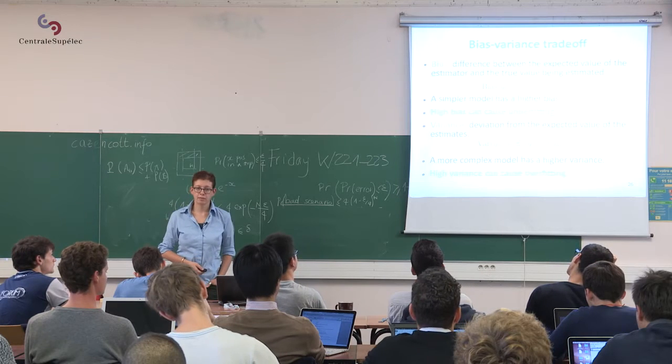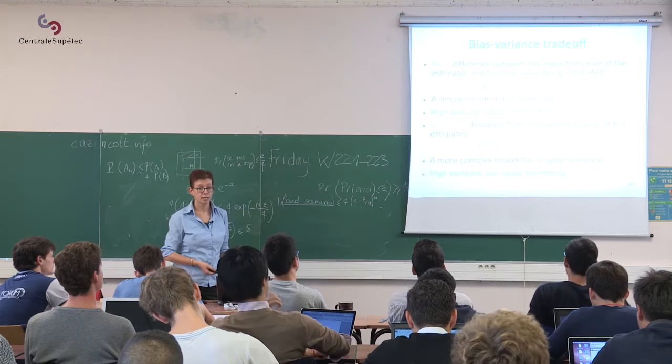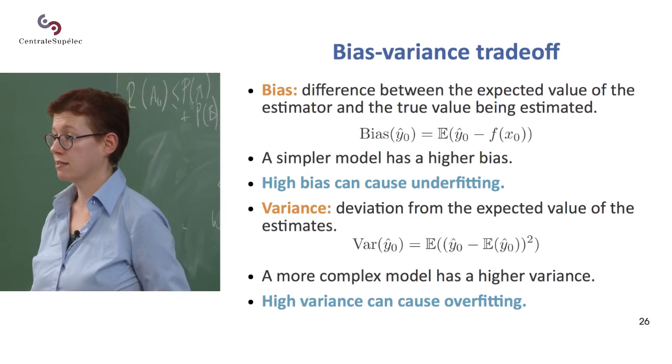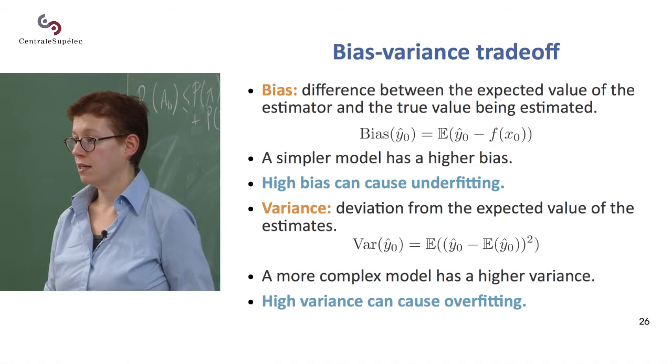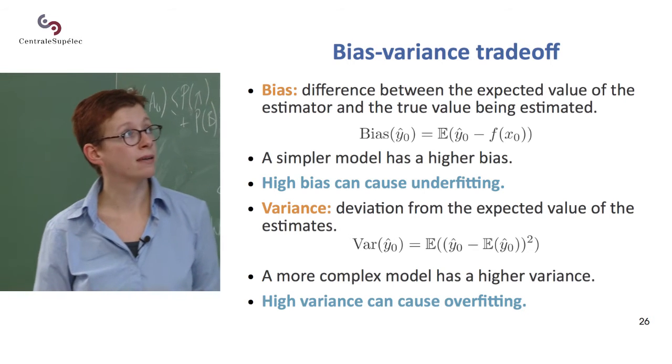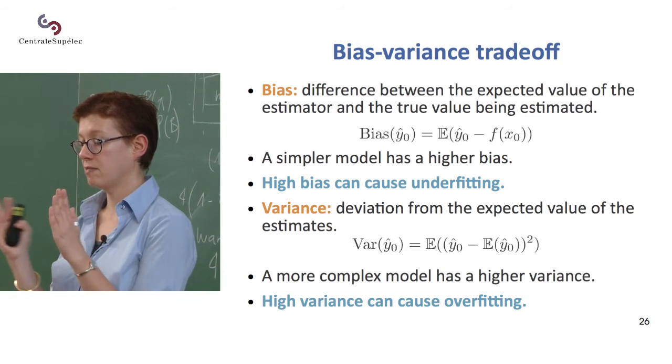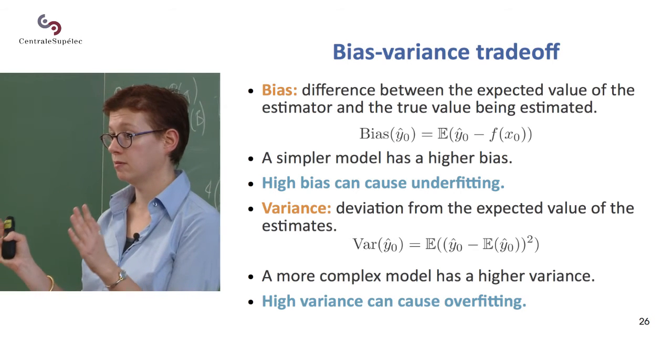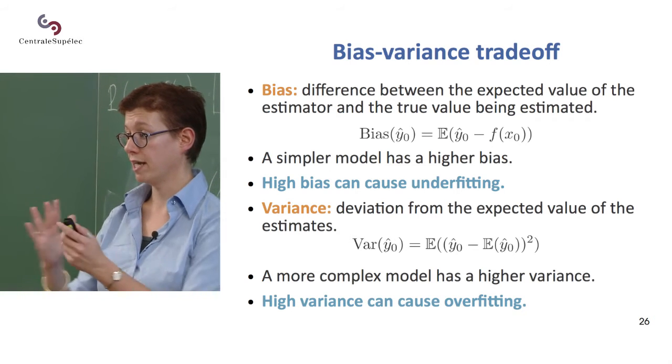So one other way to look at it is the so-called bias-variance trade-off. So if you've done a little bit of statistics, you've learned about the bias and variance of estimators. So the bias is how far your estimator is from the mean of the distribution that you're trying to estimate, and the variance is how widely this varies.